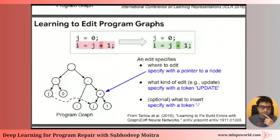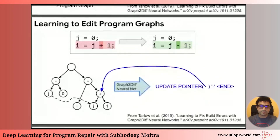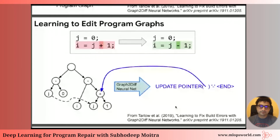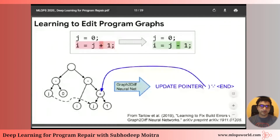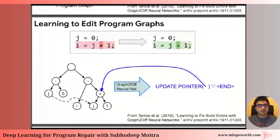We plug this into our machine learning framework and pass it through a Graph2Diff neural network. This architecture takes a state of code represented as a graph and outputs a sequence of edits in a domain-specific language, telling us how to modify the graph to get what we want. To summarize: we are interested in learning how to edit software, we want to mine patterns about editing software, and we represent those patterns as graphs that are edited with a domain-specific language using a Graph2Diff neural network.